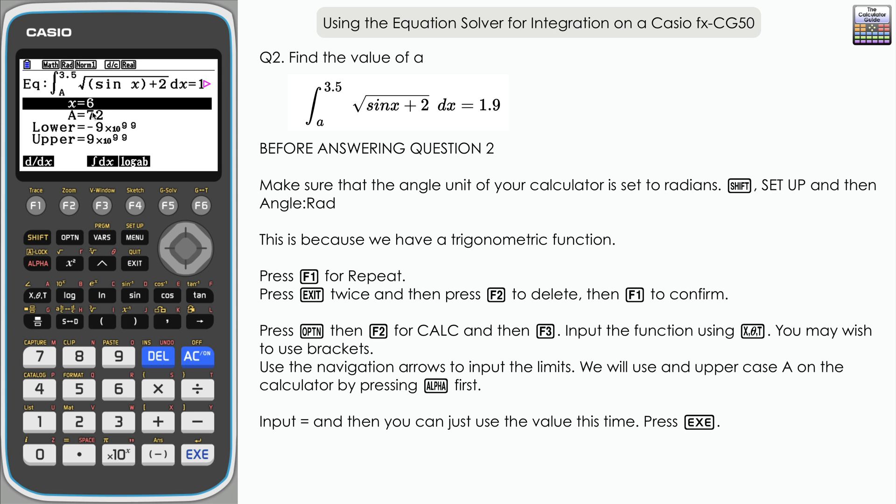Notice how we've still got the X and A values here from question 1. We're just going to solve for A, so don't worry about X—the calculator will process the X for us. We just want to navigate down to A and press execute. Here we have our result: 2.23 to two decimal places. That's going to be the lower limit of our integration that would give us the answer of 1.9.